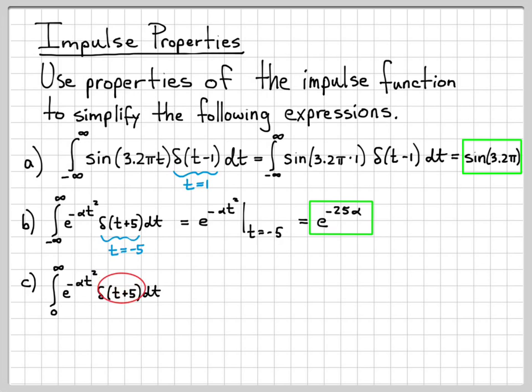we already figured out where this impulse is located. It is located at time t equals negative 5. So something very important has changed now. This impulse is not located inside the integration bounds. It's located outside the range of integration.